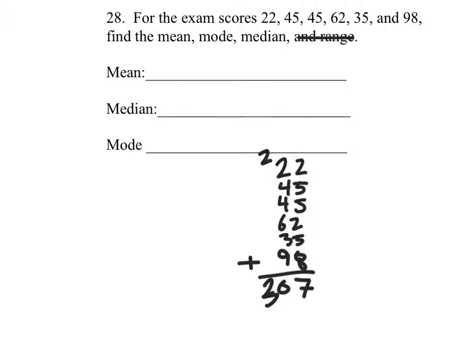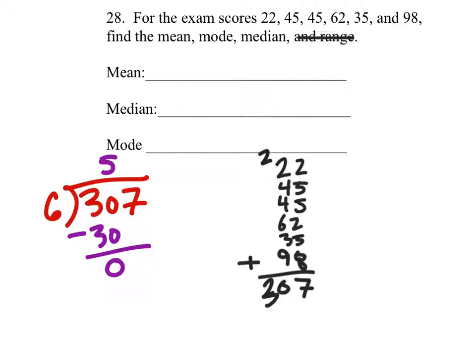Alright, well, we've got 307, and we're going to divide that by the number of numbers, which was 6. 6 goes into 35 times exactly. So when we subtract, we're just looking at 7. 6 goes into 7 one time, so our mean would be 51 and 1 sixth.